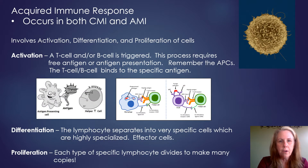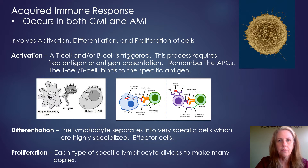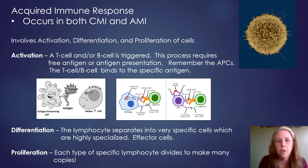We're going to be talking about this acquired immune response, and it occurs in both cell-mediated immunity and antibody-mediated immunity. There are three major processes that go on: activation, differentiation, and proliferation. We're not going to go into full detail about how all of this happens — I'm basically giving you the overview so that you can understand the big picture of acquired immunity.